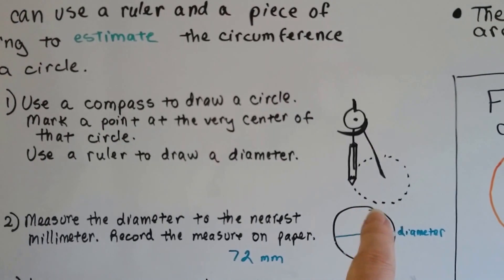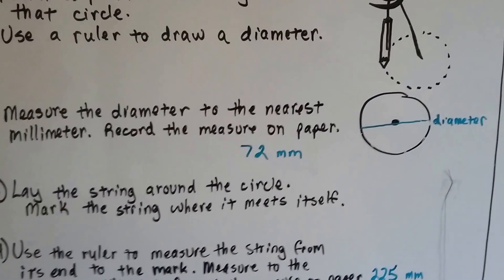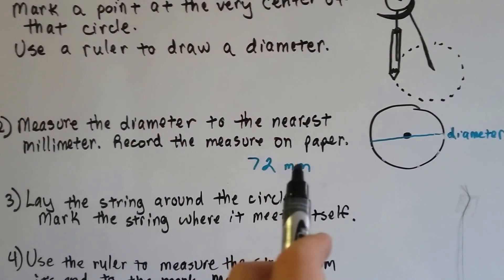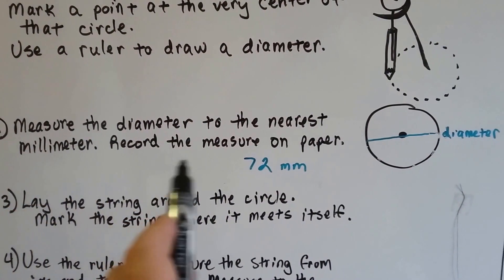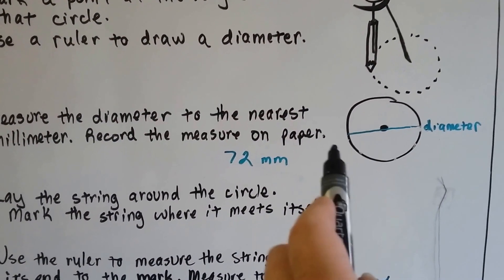You use a ruler to draw the diameter straight across and you measure the diameter with a metric measure because they're very precise and tiny little millimeters on it. And you can measure it to the nearest millimeter and record that on paper. I got 72 millimeters for straight across.